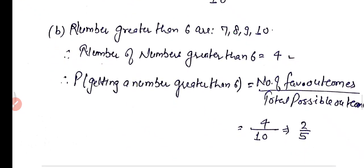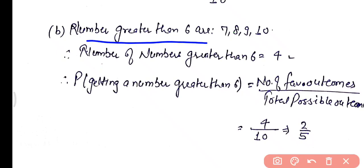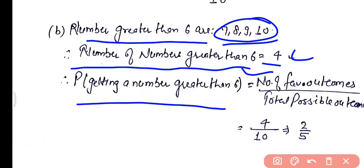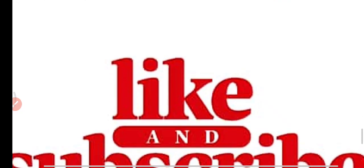Now for part 2 — numbers greater than 6 are 7, 8, 9 and 10, so there are 4 numbers greater than 6. Probability of getting a number greater than 6 equals number of favorable outcomes by total possible outcomes — that is 4 upon 10, which is 2 by 5. So this is all about worksheet number 32. If you learned from this video, please subscribe to my channel and share this video. Thanks for watching.